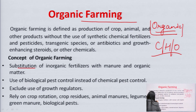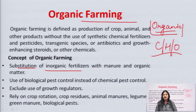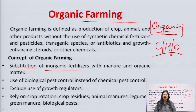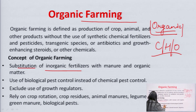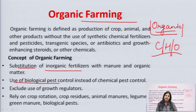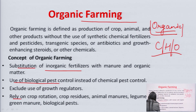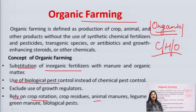This concept of organic farming came into the system to substitute inorganic fertilizers with manure and organic matter. The manure received from the excreta of animals is fed to the farms as a source of nutrients, and other organic matter is the waste from the crop yield of the farm. Secondly, it is based on the concept of biological pest control instead of chemical pest control. Thirdly, it excludes the use of synthetically produced growth regulators and plant hormones. Fourthly, it relies on crop rotation, crop residues, animal manures, legumes, green manure, and biological pest control.